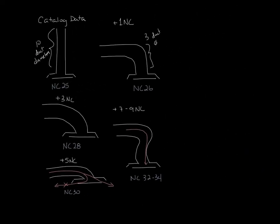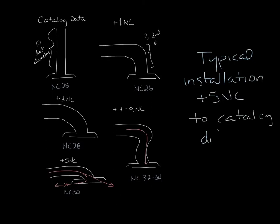So let's scoot this over so we can bring all of these installations back on screen. Different types of diffusers are affected differently, but these are good rules to use. A typical installation will probably add about 5 NC to cataloged diffuser data. So you should take that into consideration when selecting diffusers.